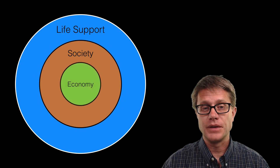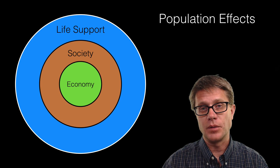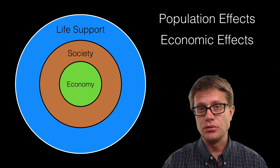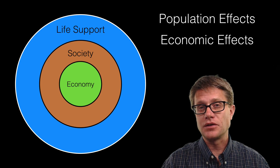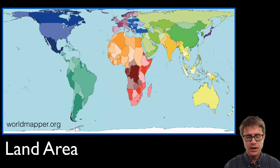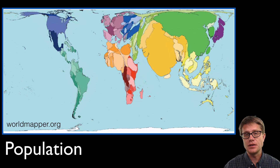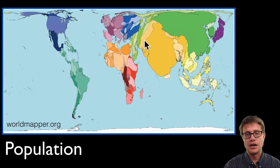Going back to our model — society and economy — as the population gets larger we have population effects on the environment, but the economy can affect it as well. To illustrate how population and economy can impact the environment, we are going to use worldmapper.org. This is a map of the world where you can change the size of countries to represent another characteristic. For example, if countries are sized to represent actual population, places like Canada shrink, while China, India, and Pakistan get much larger because they have a really high population.